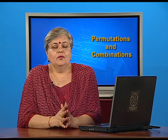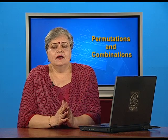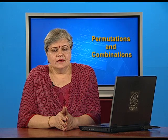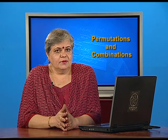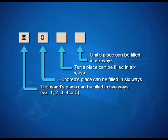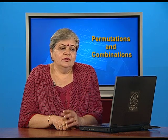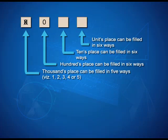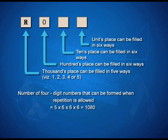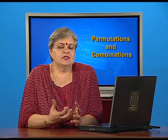Now let us look at the second possibility — what if repetition is allowed? That means a digit already used in one place is again available for other places. The only condition is that we are making a 4-digit number, so 0 cannot go into the thousands place. So the thousands place can still be filled in only 5 ways, whereas the hundreds place can be filled in 6 ways, because 0 is available and whatever was put in thousands is also available. Similarly, the tens and units places can each be filled in 6 ways. So when repetition is allowed, the total is 5 times 6 times 6 times 6, which turns out to be 1080 — obviously a larger number.